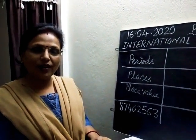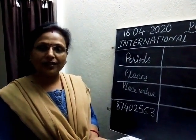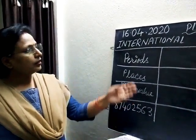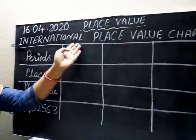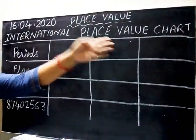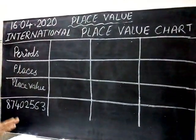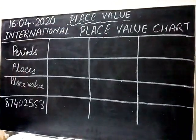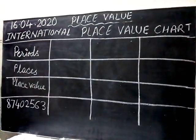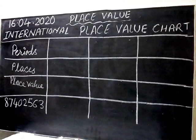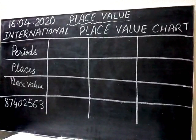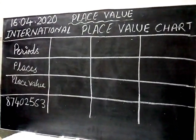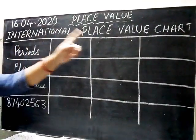Good morning children. Hope you liked yesterday's activity. Now should we proceed today further with the next topic. So look here, today our topic is international place value chart. Till today we had done place value, number names, arranging numbers, comparison of numbers — whatever we have done was according to the Indian place value chart. Today the same things we will repeat but according to the international place value chart.